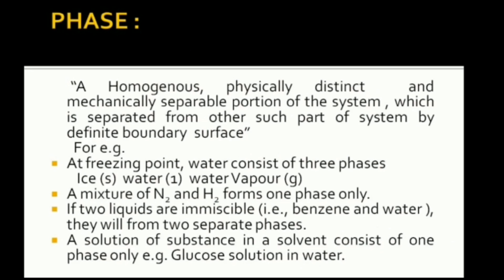There are three terms involved in phase rule. We will discuss them one by one. The first term is phase. A homogeneous, physically distinct, and mechanically separable portion of the system which is separated from other such parts of the system by a definite boundary surface is known as a phase.